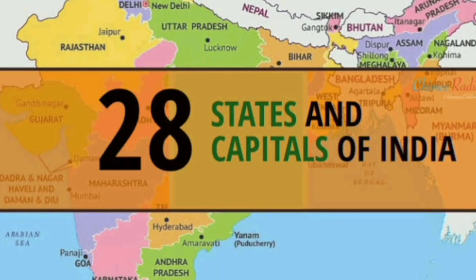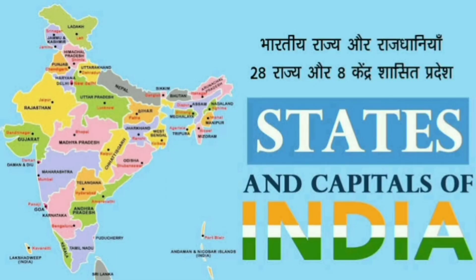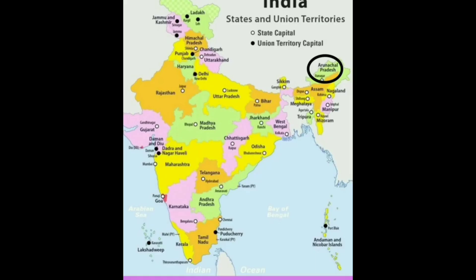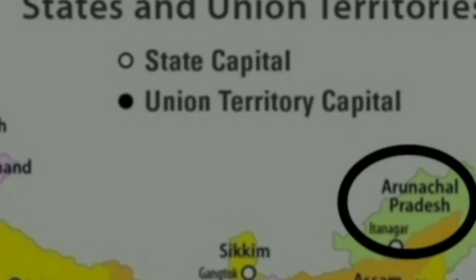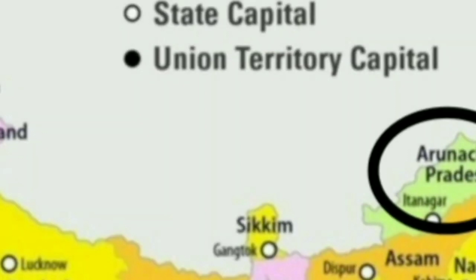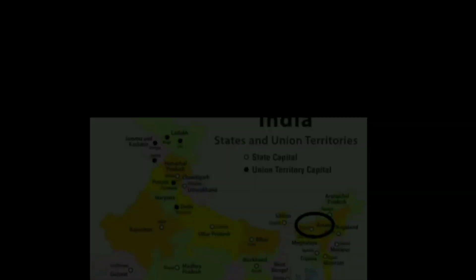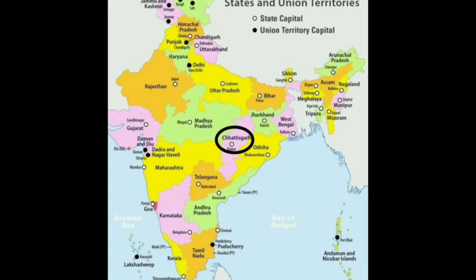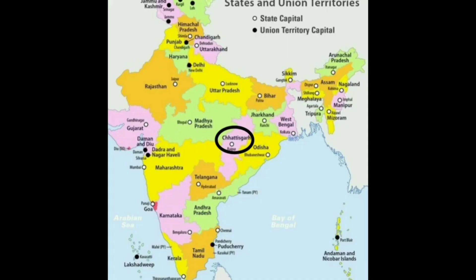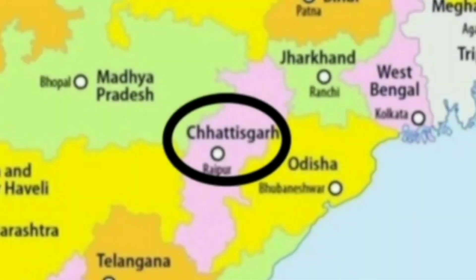Let us know about states and capitals. Andhra Pradesh — Amaravati. Arunachal Pradesh — Itanagar. Assam — Dispur. Bihar — Patna. Chhattisgarh — Raipur.